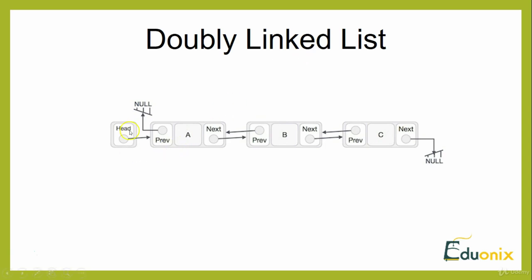Doubly linked list includes some key terminologies. A link can store data called an element, followed by the next tag which points to the next element — each link contains a link to the next link. After that comes the previous pointer, which is new to doubly linked list — each link also contains a link to the previous link.